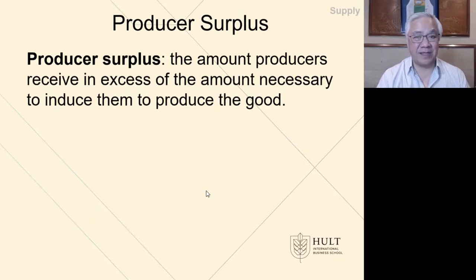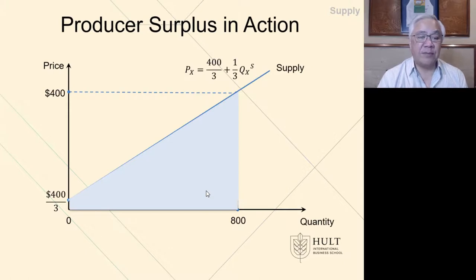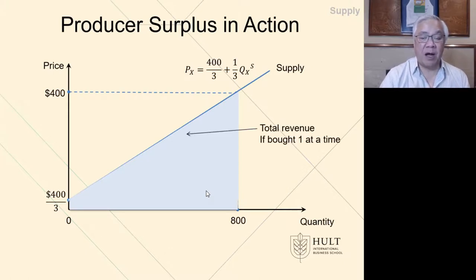We'll first look at the producer surplus in action. If we bought one unit at a time and each one was at a slightly higher price, then the producer would capture this entire triangle because they sell one at a time at the price that person is willing to buy. This is not a very reasonable event that happens.